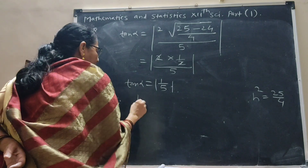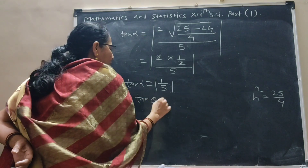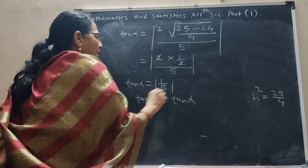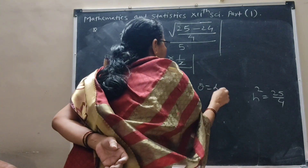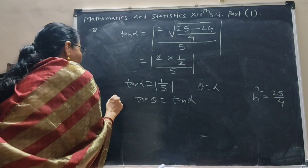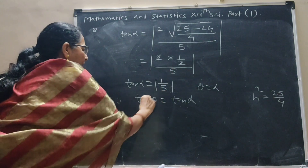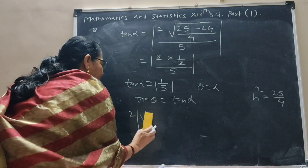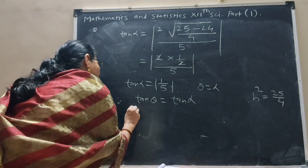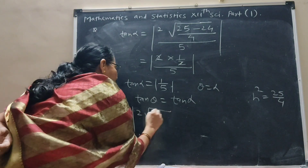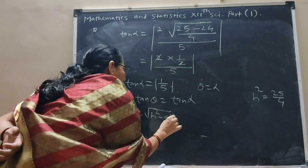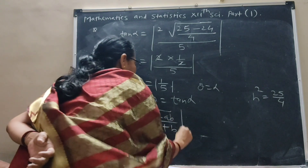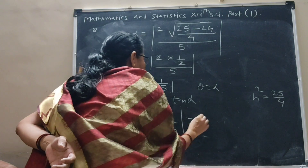Therefore, since θ = α, we have tan θ = tan α. So tan θ = 2√(h² − ab) / (a + b) is equal to tan α = 1/5.